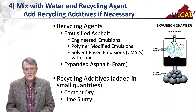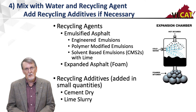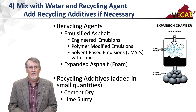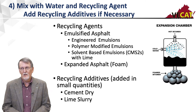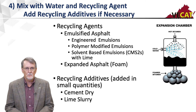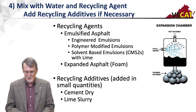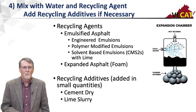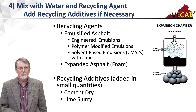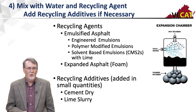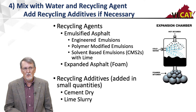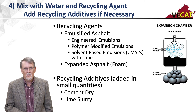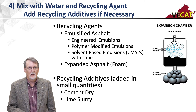To make foamed asphalt, you take very hot asphalt cement at 325 to 350 degrees Fahrenheit and run it through a series of nozzles where a small amount of water — about two percent based on the weight of the asphalt — is injected. When that cold water hits the hot asphalt it turns to steam, causing the asphalt to foam into bubbles that allow easy mixing. Recycling additives can also be added: cement added dry, or lime added as slurry. Cement is very commonly added with foamed asphalt because it provides the fines needed to help disperse the foam.